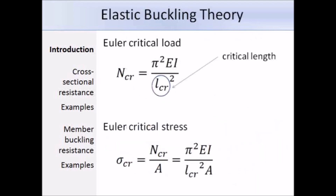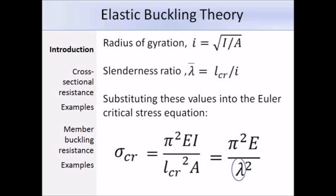Now we are going to talk about elastic buckling theory. Here is the expression for the Euler critical load, N_CR, which provides a measure of the slenderness of the compression member. EI is the flexural rigidity. To get the Euler critical stress, we divide the Euler load over the area, giving the expression at the bottom. The critical stress is not related to the strength of the material but rather the stiffness E. The radius of gyration is equal to the square root of the second moment of area over the area, and the slenderness ratio lambda-bar is equal to the critical length over the radius of gyration. Substituting these values gives a final expression, and since the slenderness ratio is squared, a small increase in its value can significantly affect the Euler stress. Both the radius of gyration and the critical length can greatly affect the Euler critical load.